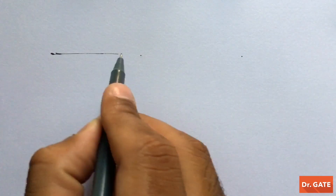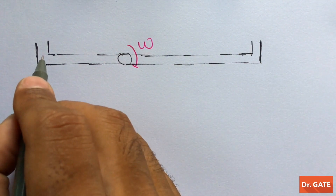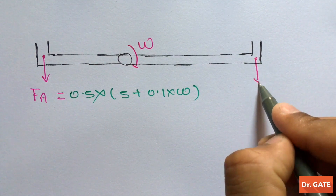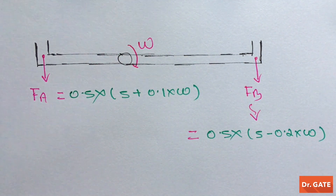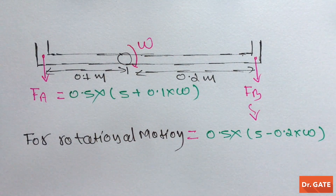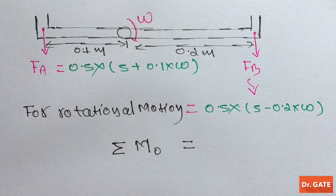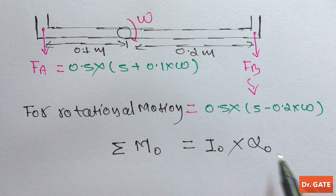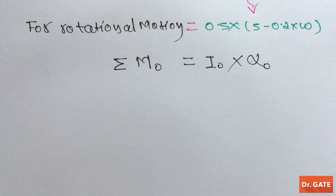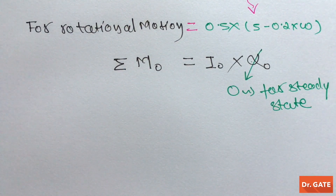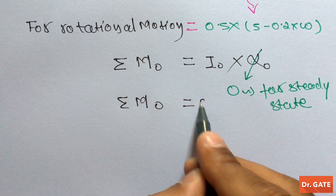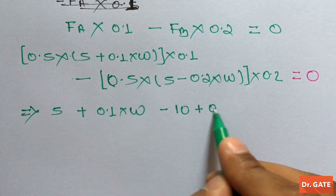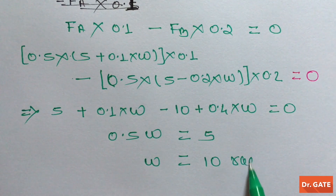For simplicity, let's redraw the sprinkler. The reaction force at point A acts with a certain magnitude, and similarly for point B. For the rotational motion of the sprinkler, the summation of moments about the hinge equals the mass moment of inertia about the hinge times the angular acceleration. For steady state, the angular acceleration is zero, so the summation of moments about the hinge equals zero. On putting the given values and solving, the steady state angular speed of rotation of the sprinkler is 10 radian per second.